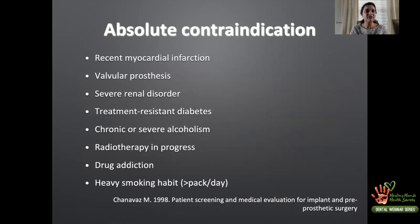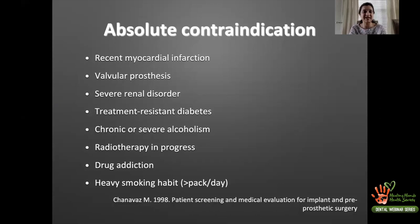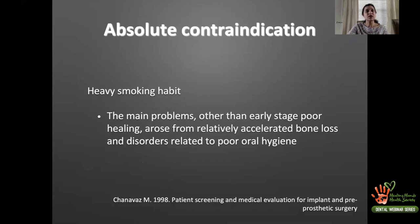Treatment-resistant — meaning uncontrolled — diabetes is an absolute contraindication for implant placement, as are chronic or severe alcoholism, radiation therapy in progress, drug addiction, and heavy smokers. Smokers of more than 10 cigarettes per day are considered at high risk, as are those who have been smoking for more than 10 years. Smoking restricts blood supply to the healing site, and smokers also show accelerated bone loss and disorders related to poor hygiene.